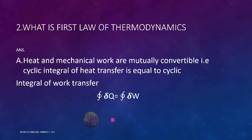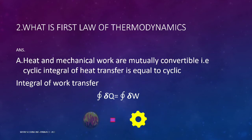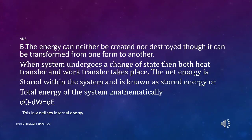This is how heat and mechanical work are mutually inter-convertible. The process should be cyclic — that is one of the constraints. Another corollary of the first law of thermodynamics is that energy can neither be created nor destroyed.